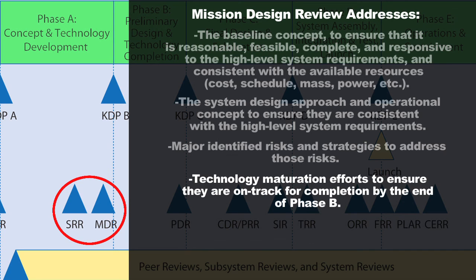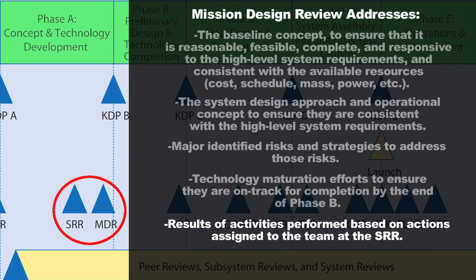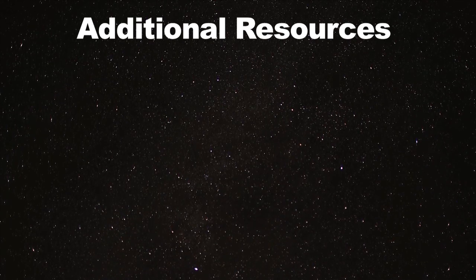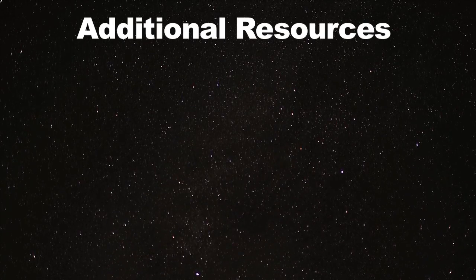You're also going to look at the technology maturation effort. Deeper into Phase A, the review team wants to know if everything is on track and your technology plan is executing as planned, so that by the end of Phase B your technologies will be mature and ready for flight and implementation. Finally, you'll look back at the System Requirements Review and verify that any actions assigned by the technical review team have been completed and closed out.